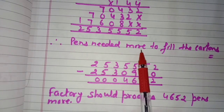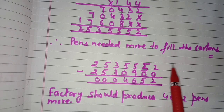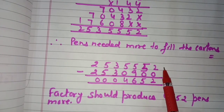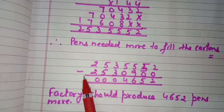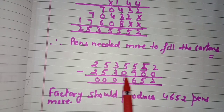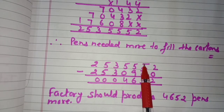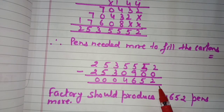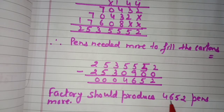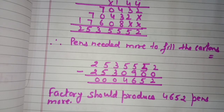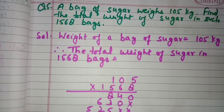Pens needed: 25,35,552. Pens available: 25,30,900. We subtract to find how many more pens are needed: 25,35,552 minus 25,30,900 equals 4,652. So the factory should produce 4,652 more pens to fill all the cartons.